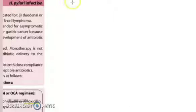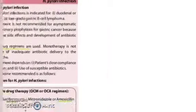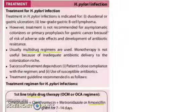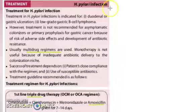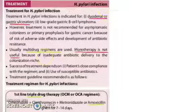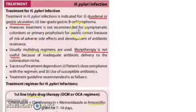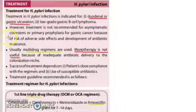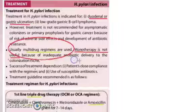Let's look at the treatment for H. pylori infection. This is actually important for pharmacology also, so pay attention. Here we are talking about the treatment. What are we trying to treat? We are trying to treat duodenal or gastric ulcers which are symptomatic — the person has come to us saying they have a problem. So, what we will give is a multi-drug regimen.